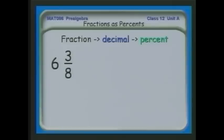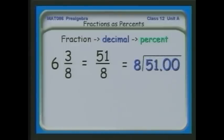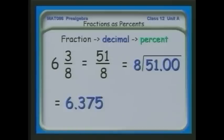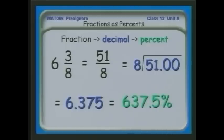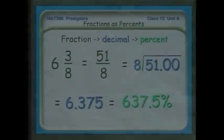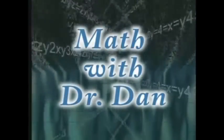Let's do one more: the mixed number six and three-eighths as a percent. First I change it to an improper fraction by multiplying six times eight and adding three, giving 51 eighths. Then I do the division — 51 divided by eight — which gives me the decimal 6.375. Then to go from 6.375 to a percent, I move the decimal two places to the right, and I can express six and three-eighths as 637.5 percent.